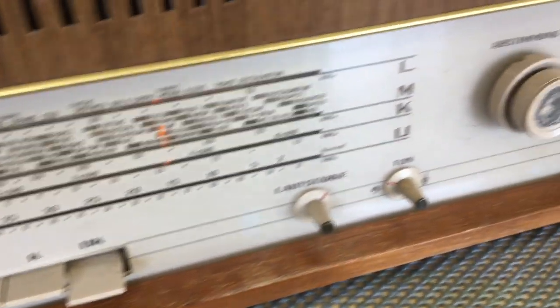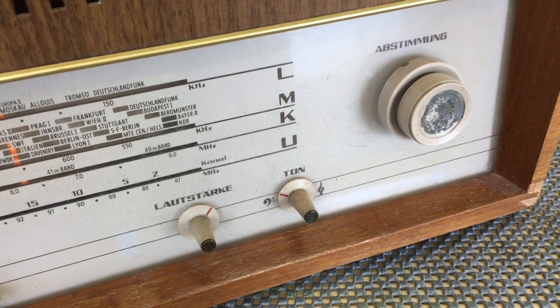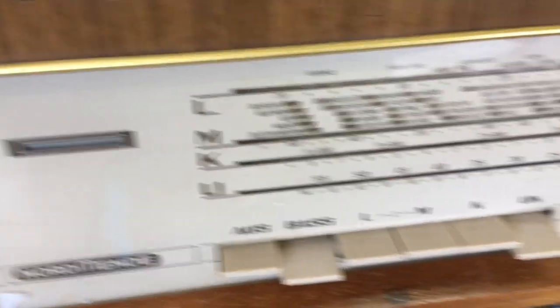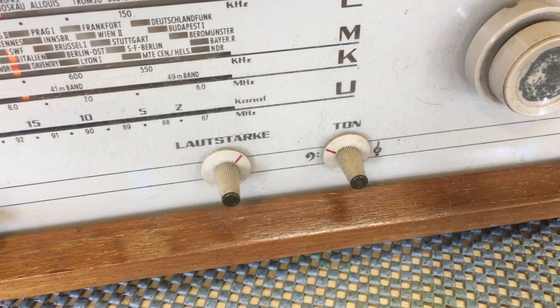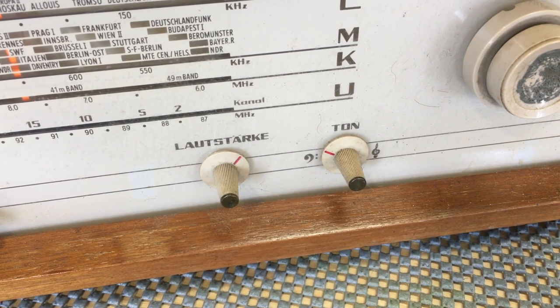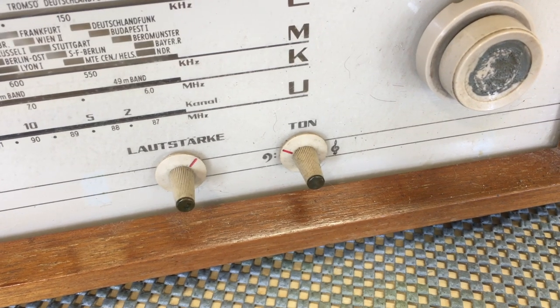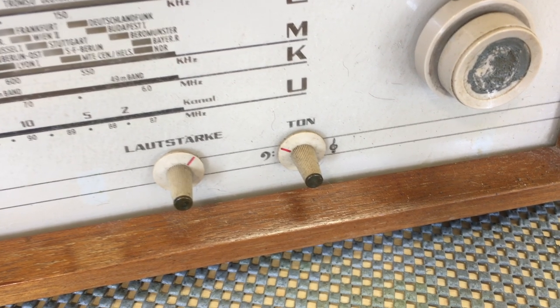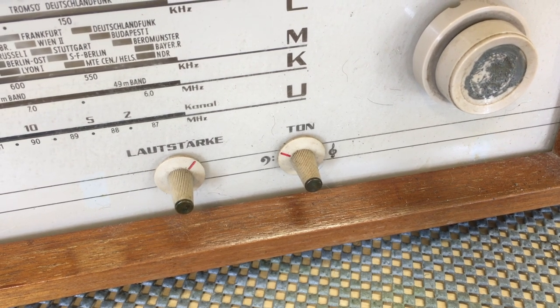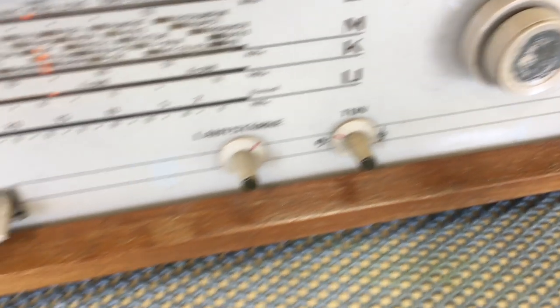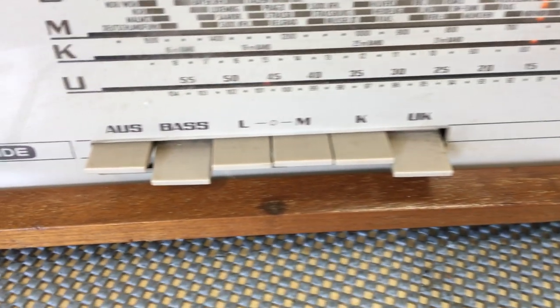We've got just controls on the right-hand side, nothing on the left, except we do have a magic eye over there, but no controls. And here we've got volume, Lautstriker I think is amplifier, so that's volume. We've got just one tone control, which is probably just a tone control. No separate bass and treble, although we do have that bass boost button on there. And then we've got the tuner.